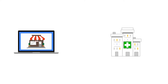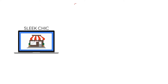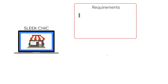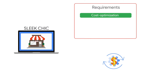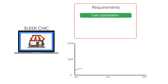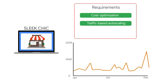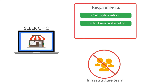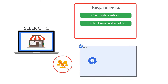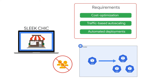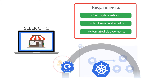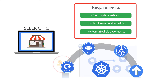Let's start by taking a look at two fictitious companies that are looking for a managed Kubernetes service. Sleek Chic is a small online boutique looking for the most cost-optimized way to run their containerized workloads. They want a service that can support the traffic spike their site receives during busy sales periods. But since they don't have a dedicated infrastructure team, they'd like a fully automated, scalable Kubernetes service to run everything from microservices to databases to automatic cluster upgrades.